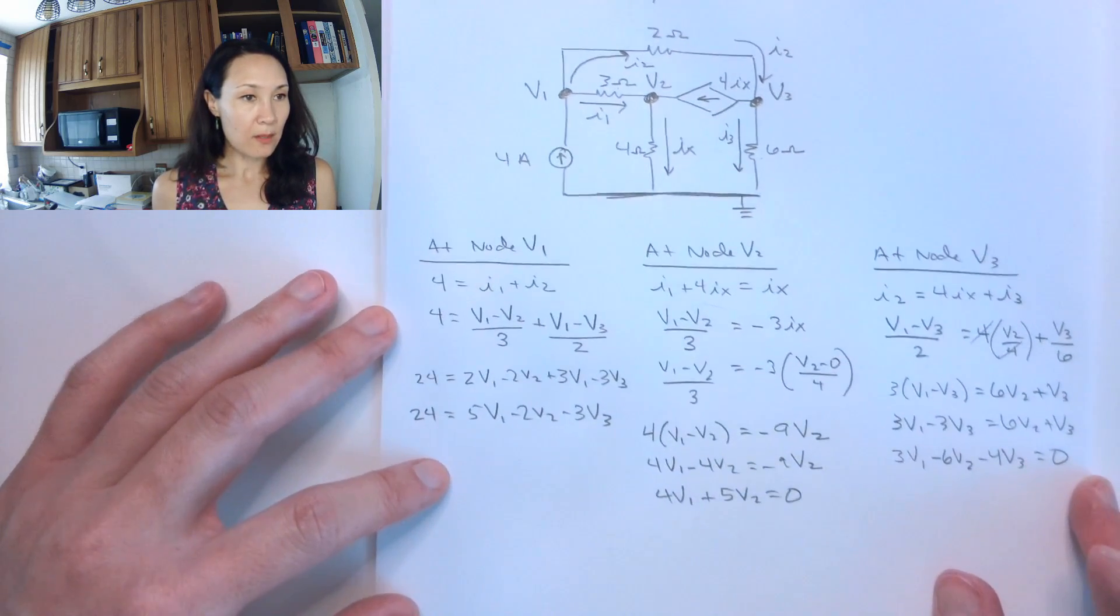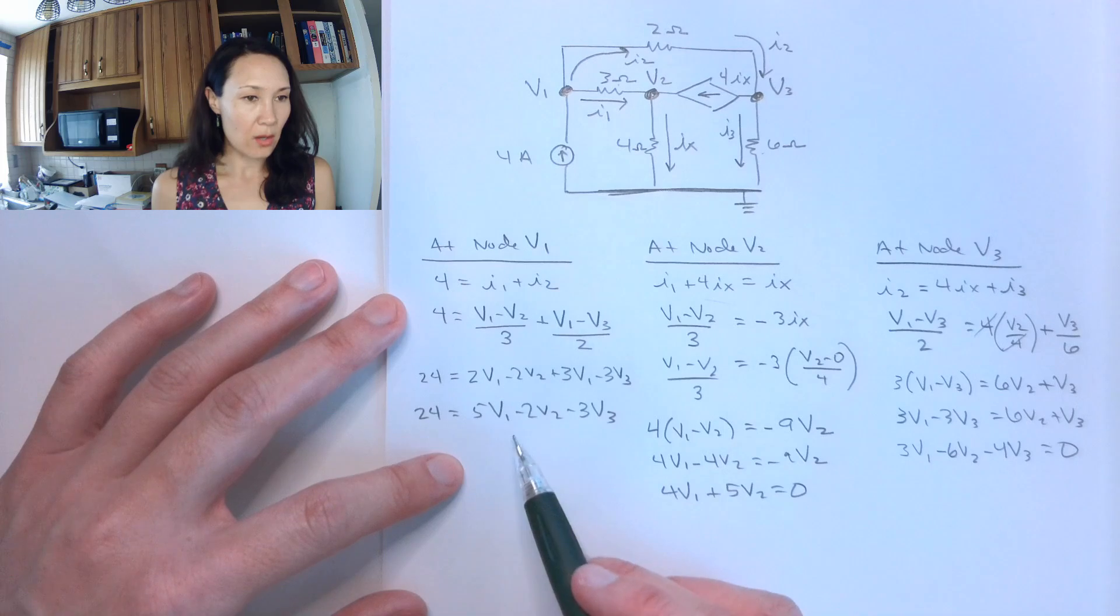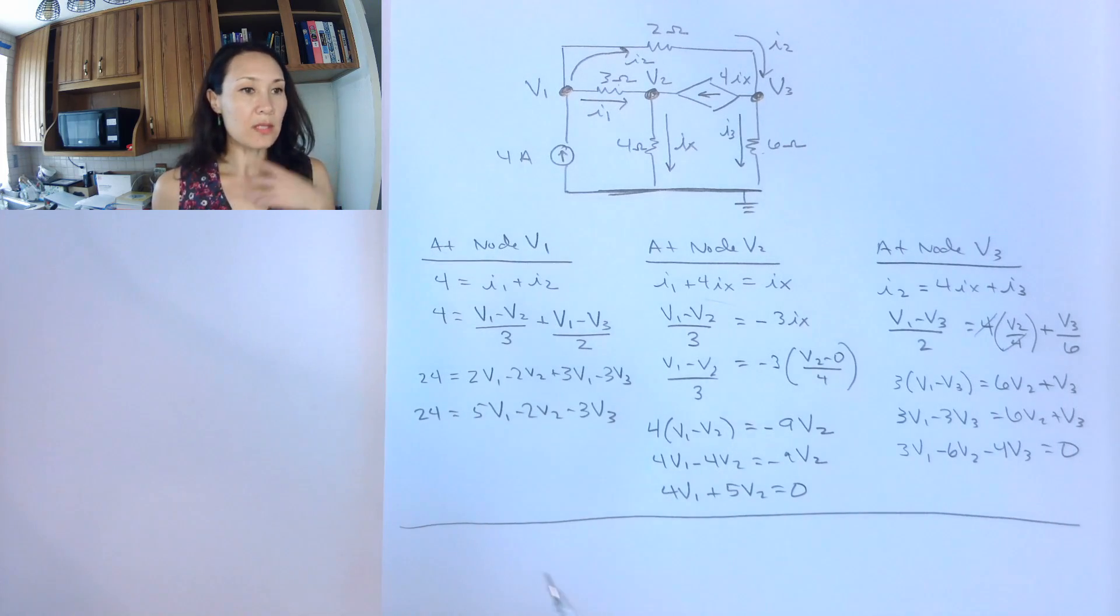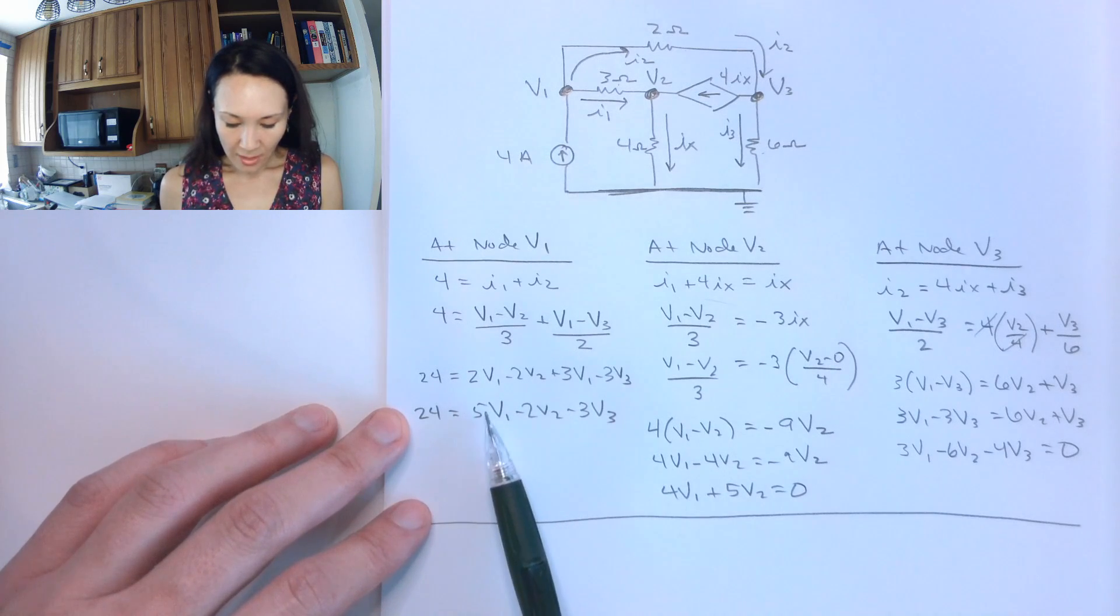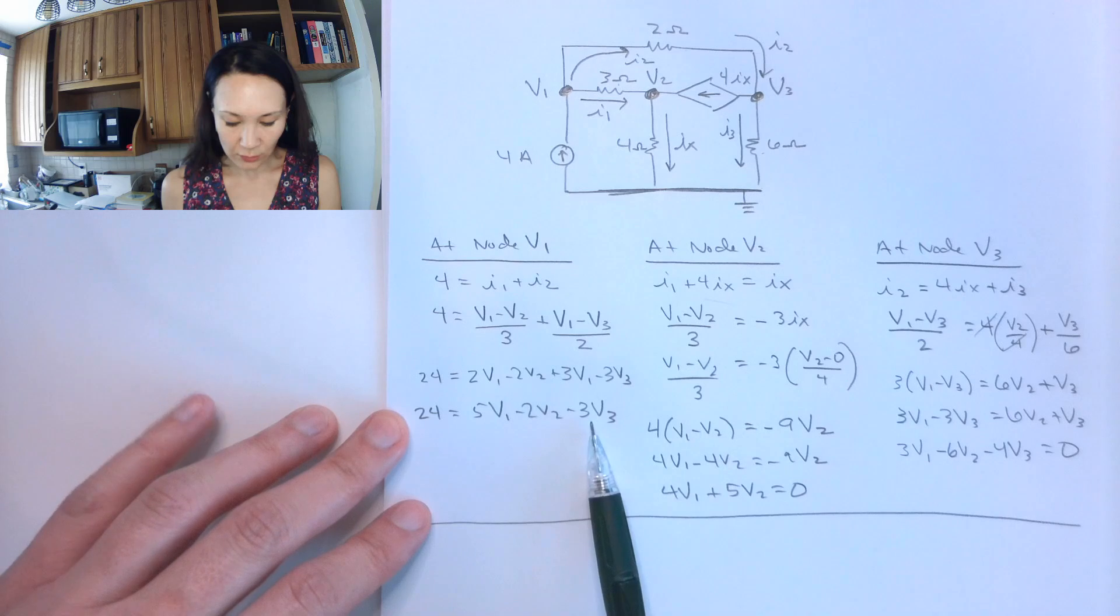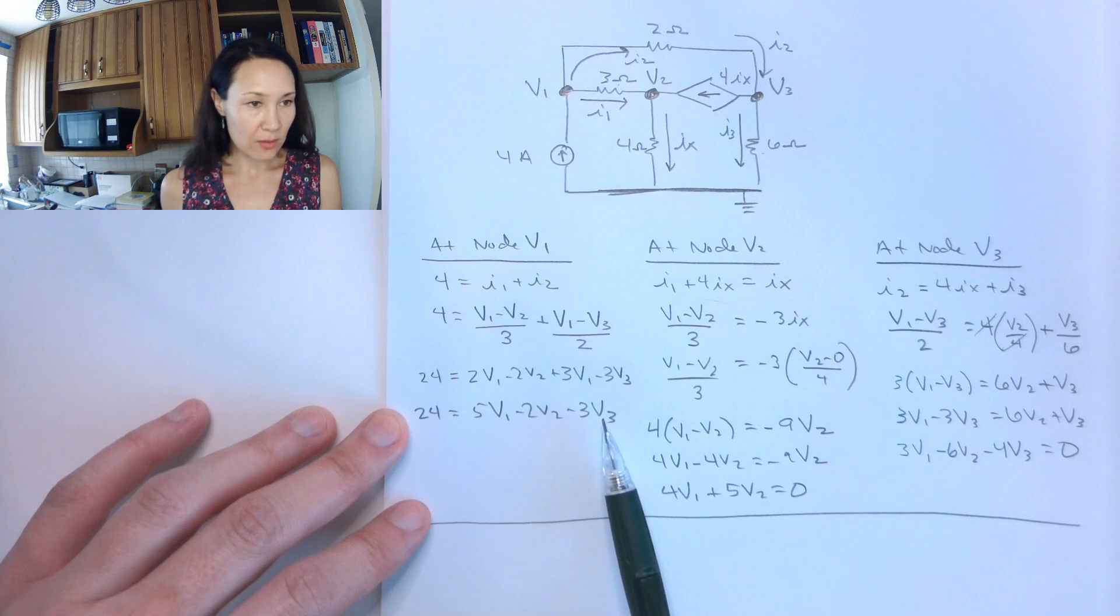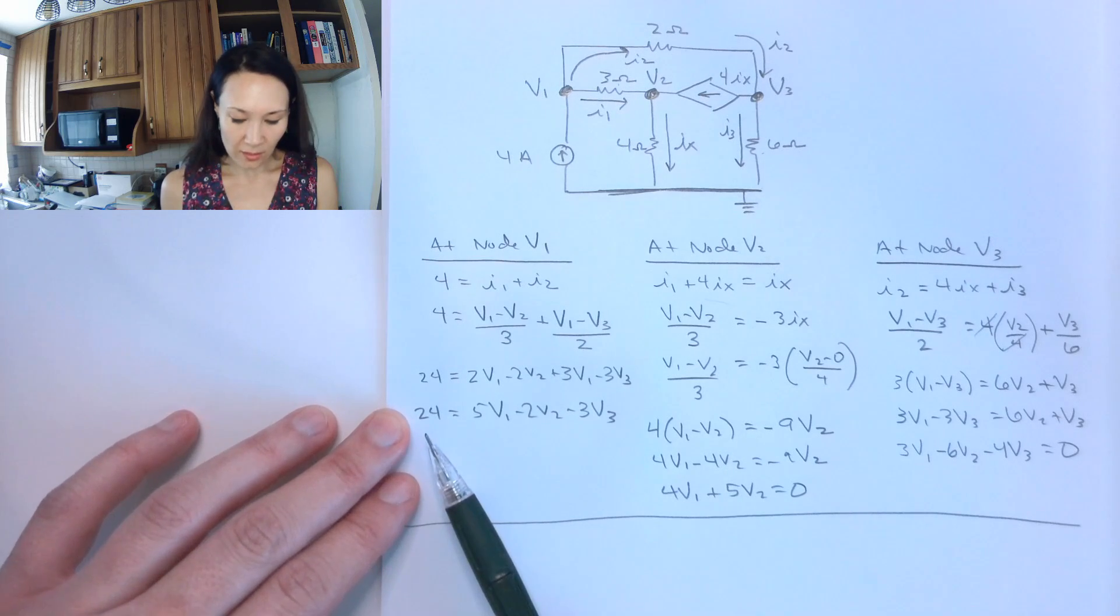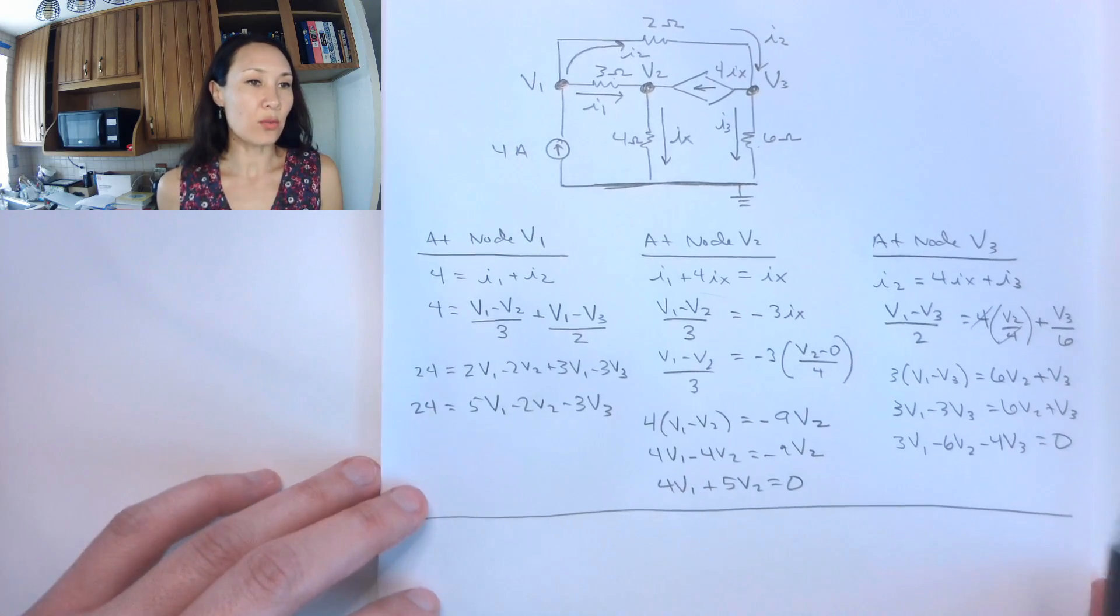So at this point, you'll notice we have 3 equations and 3 unknowns. I already wrote all of these in standard form. So in other words, I only have, I have whole number of constants being multiplied by V1, V2, V3 in all these equations. I have them all on one side of the equal sign. And then I have either 0 or whatever the constant is equal to on the other side. Okay, so at this point, with 3 equations and 3 unknowns, you could use substitution to solve this.